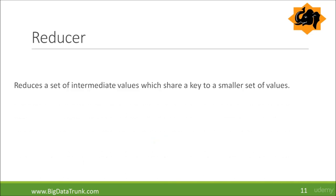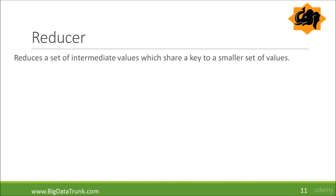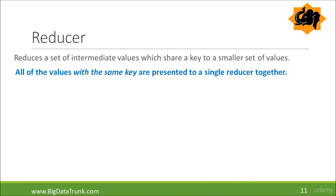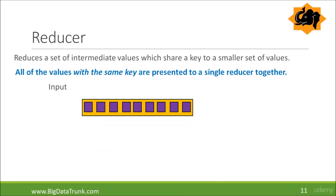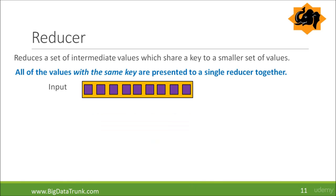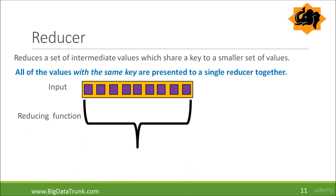Now what will the reducer do? The reducer reduces a set of intermediate values which share a key to a smaller set of values. All values with the same key are presented to a single reducer together. The reducer works on one set of records at a time and gets a key and a list of values — for example, the city name is the key and the list of values will be all the sales. It then processes the data by adding all the sales to get the final result.